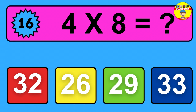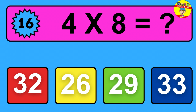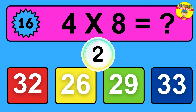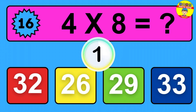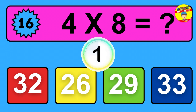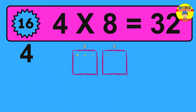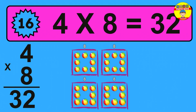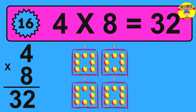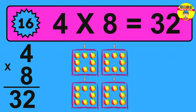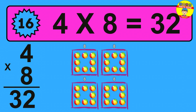Question 16: 4 times 8 equals what? The answer is 4 times 8 is 32. To calculate, we have 4 groups with 8 balls each one.